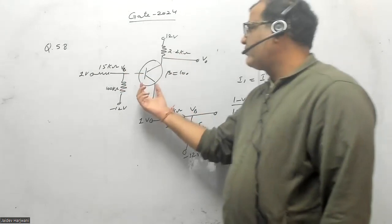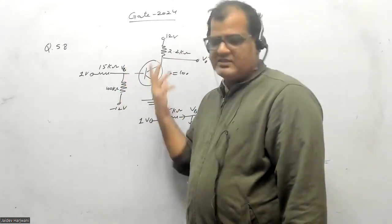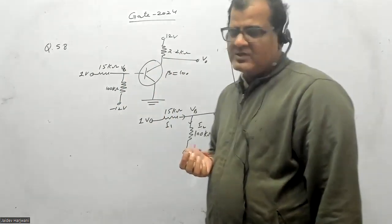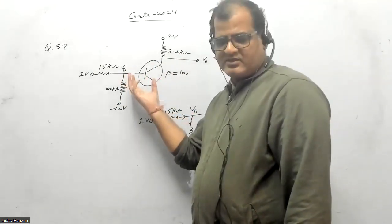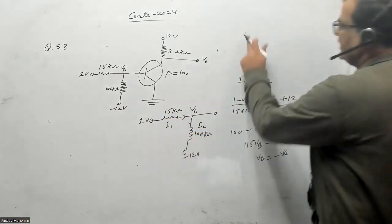Now if I want to flow a current IC here, I have to make this junction forward bias. Now the junction is not forward biased. VB is still coming negative, so obviously this junction is not forward biased, so IB cannot flow. So IB is zero.